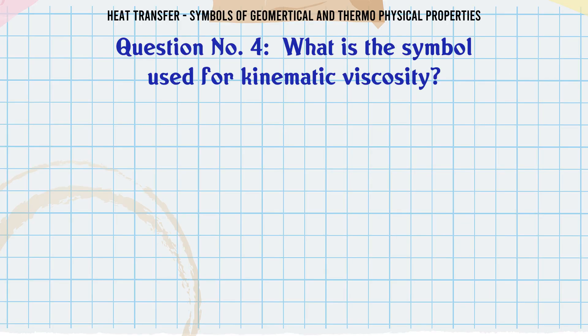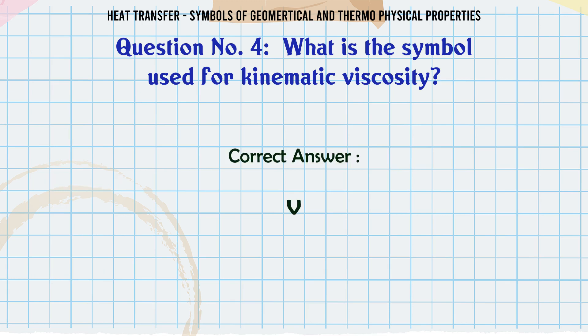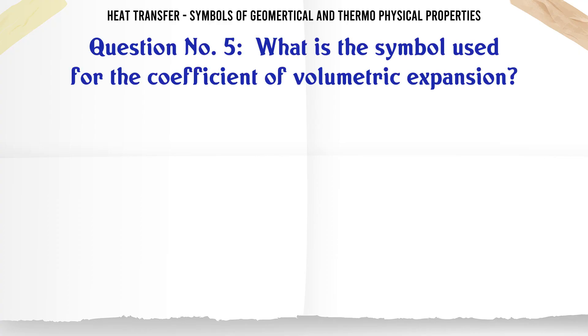What is the symbol used for kinematic viscosity? A: V. B: (option). C: (option). D: (option). The correct answer is V.